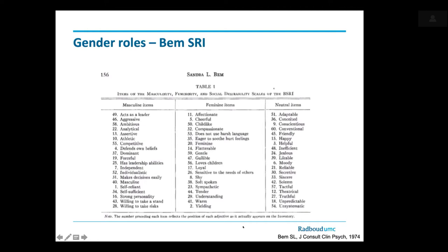When it comes to gender roles, there's a series of questionnaires — the Bem Sex Role Inventory is the most widely used. It was developed in the 1970s to break up the idea that being a man or woman are two extreme poles on one line. Sandra Bem tried to show that people have masculinity, femininity, and androgynous attributes regardless of how we see them. It's still widely used but you need to be careful and well-informed about what it does.